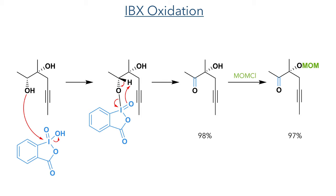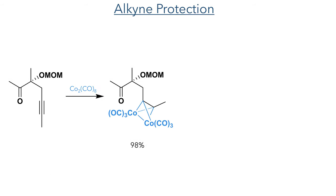Following this reaction, the tertiary alcohol was protected as a MOM group using MOM chloride in a 97% yield. Taking this forward, the alkyne was then protected using dicobalt octacarbonyl, which forms a stable complex in a 98% yield.